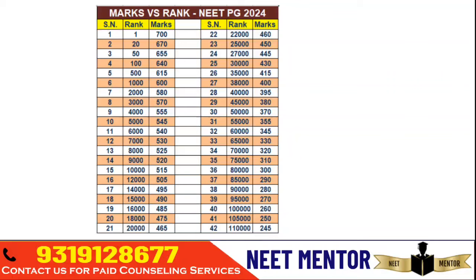If your score is around 500 you can expect rank around 13,000; 490 around 15,000; 475 around 18,000 — last year it was around 500, so expect roughly 25 marks less than last year on average. A score of 450 gives around 25,000 rank; 430 around 30,000; 400 around 38,000; 380 around 45,000; and around 375 to get rank under 50,000.